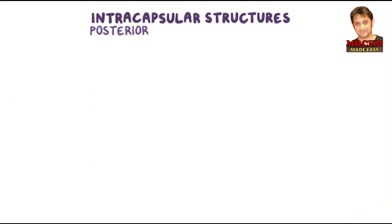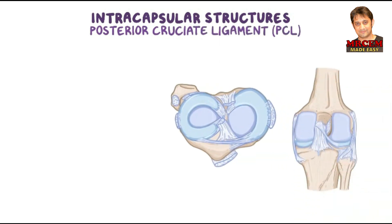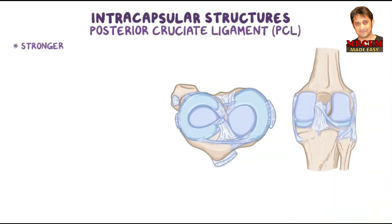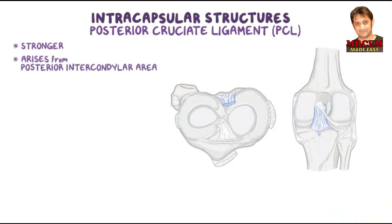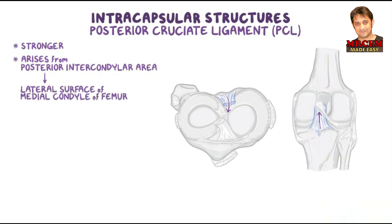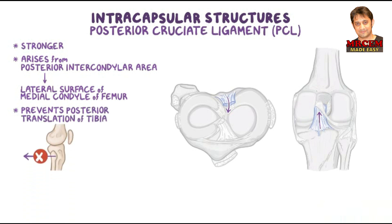The posterior cruciate ligament, or PCL, is stronger than the ACL and arises from the posterior intercondylar area of the tibia. It passes superiorly and anteriorly on the medial side of the ACL to attach to the anterior part of the lateral surface of the medial condyle of the femur. The PCL prevents posterior translation of the tibia relative to the femur and helps to prevent hyperflexion of the knee.